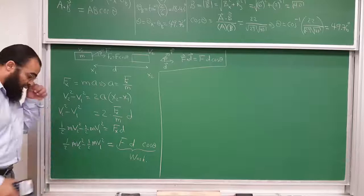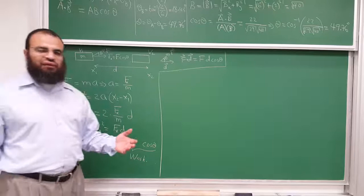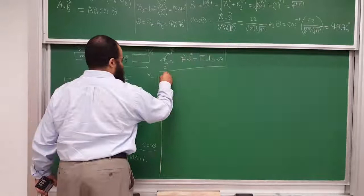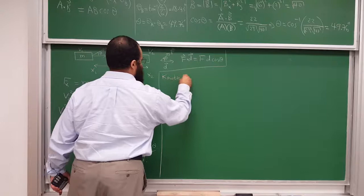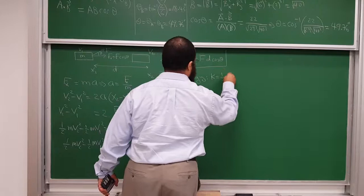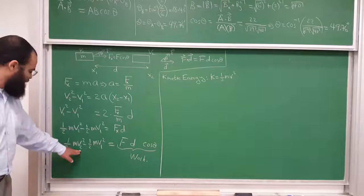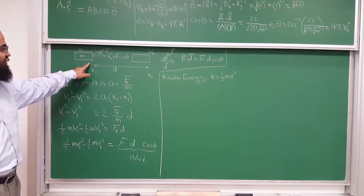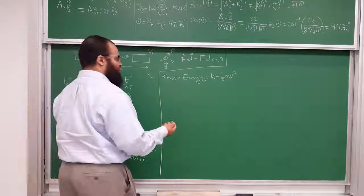When you define something, you can define things for any reason, but usually you have a reason. Definitions are neither right nor wrong — we will just call this kinetic energy. The combination ½mv² is given the symbol K and equals ½mv². So ½mv2² is the kinetic energy at point 2, and ½mv1² is the kinetic energy at point 1. It turns out to be very useful, and that's why we define it this way.